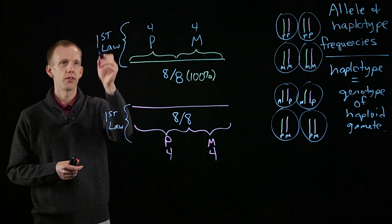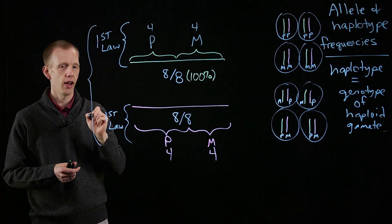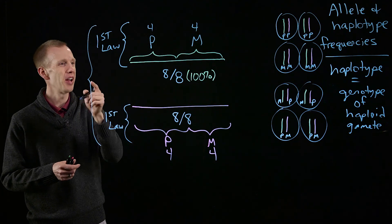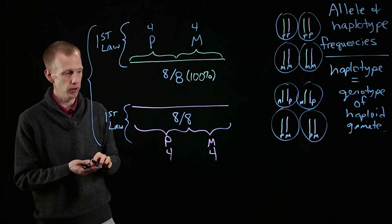So this is the result from Mendel's first law. Mendel's second law, independent assortment, has to do with what happens with combinations of these alleles from different chromosomes.